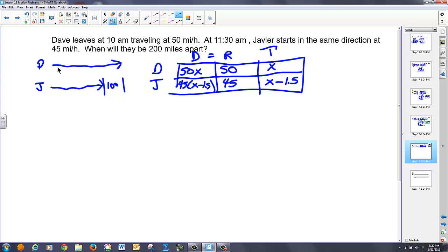And we notice these two distances aren't equal. Dave's actually longer. Dave actually is equal to Javier's distance plus 100. If you can see that in the picture you can just write the equation to explain that picture. So, now I'll take 50X for Dave's distance set that equal to Javier's distance 45 times X minus 1.5 and add 100 to that.